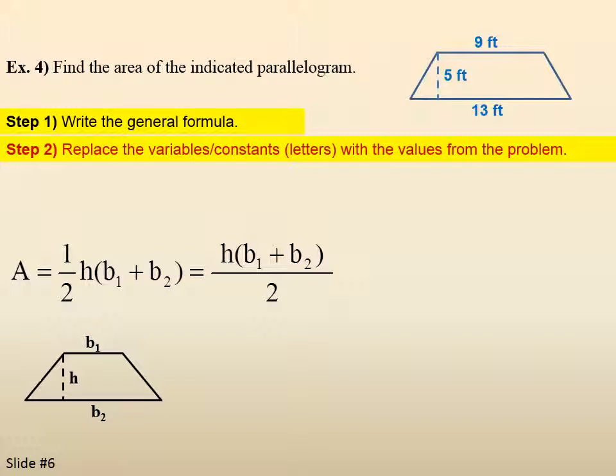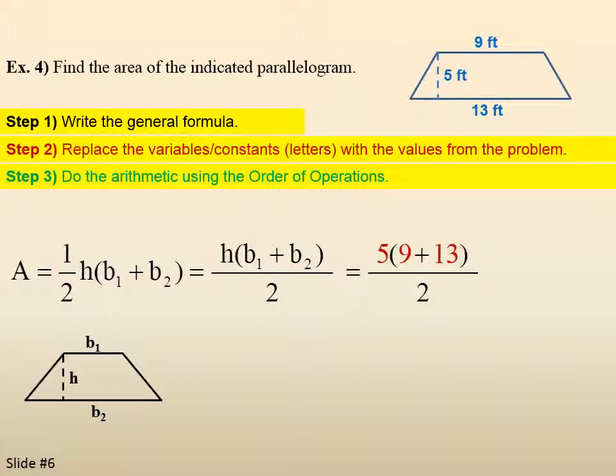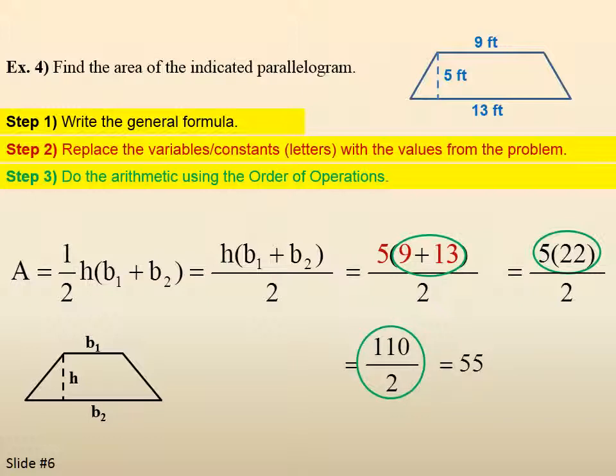Replace the variables, constants, letters with the values from the problem. So the height is 5. Base 1 is 9. Base 2 is 13. Do the arithmetic using the order of operations. So 9 plus 13 is 22. 5 times 22 is 110. Which reduces very nicely to 55. Put the answer in the form requested, they didn't give us any form. So it's feet squared because it's an area. So it's 55 feet squared.